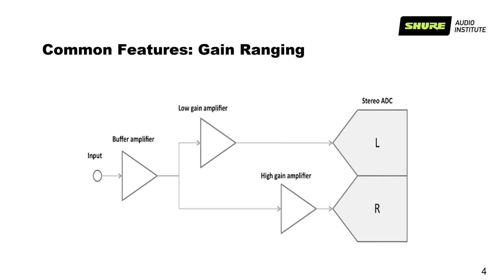This dual-stage A/D section expands the dynamic range well above 120 dB — more than any single-stage analog front-end in a traditional system. For most signals, there is no necessity to adjust gain in these transmitters. There is still a gain control called gain offset on some transmitters like ULXD, QLXD, and Axient Digital, but it occurs in the digital signal path and is not intended as an input sensitivity adjustment. Rather, it's a means of normalizing the level between multiple transmitters linked with a particular receiver.